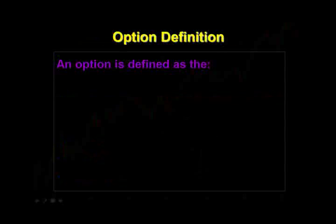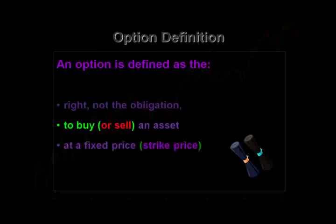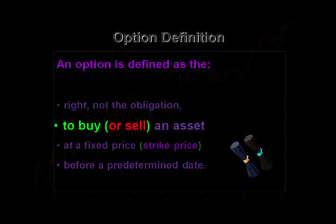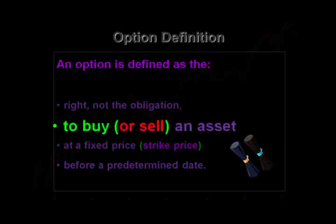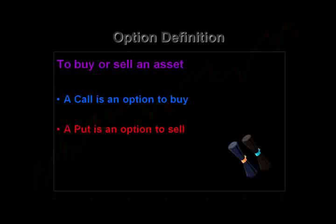Let's now go through the definition of an option. An option is defined as the right, not the obligation, to buy or sell an asset at a fixed price before a predetermined date. We're going to focus right now on 'to buy or sell an asset.' A call is an option to buy. A put must therefore be an option to sell — the rule of the opposites.